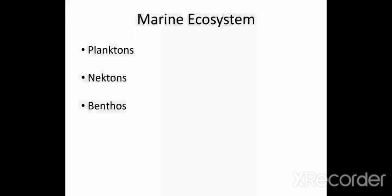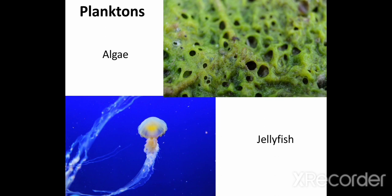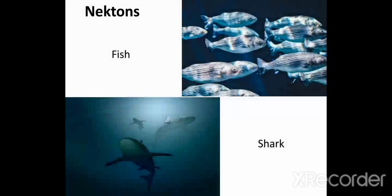Organisms in marine ecosystem are divided into planktons, nectons, and benthos. Planktons are the animals which drift with the water current, for example algae, jellyfish, and crabs. Nectons are the organisms which are very strong swimmers and water current do not affect them, for example fish and shark.